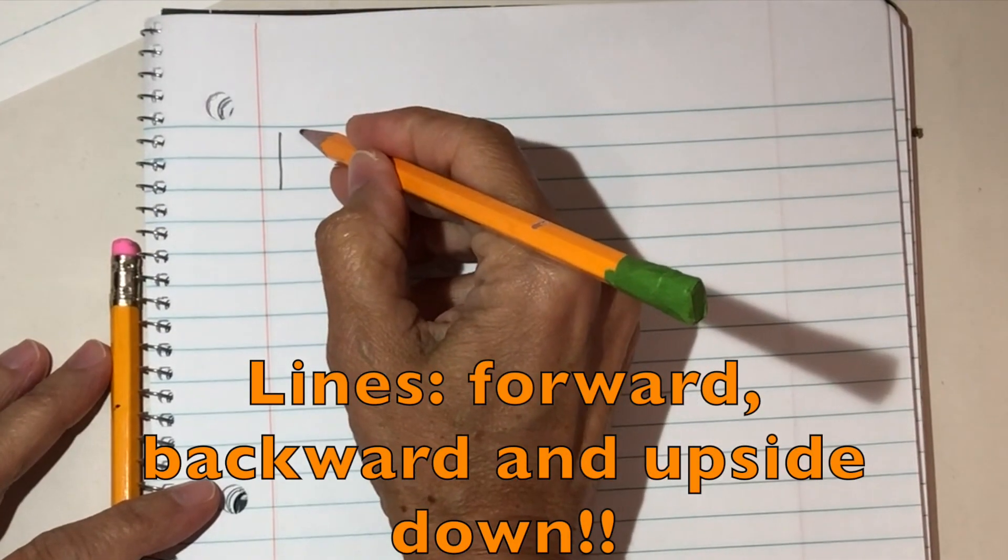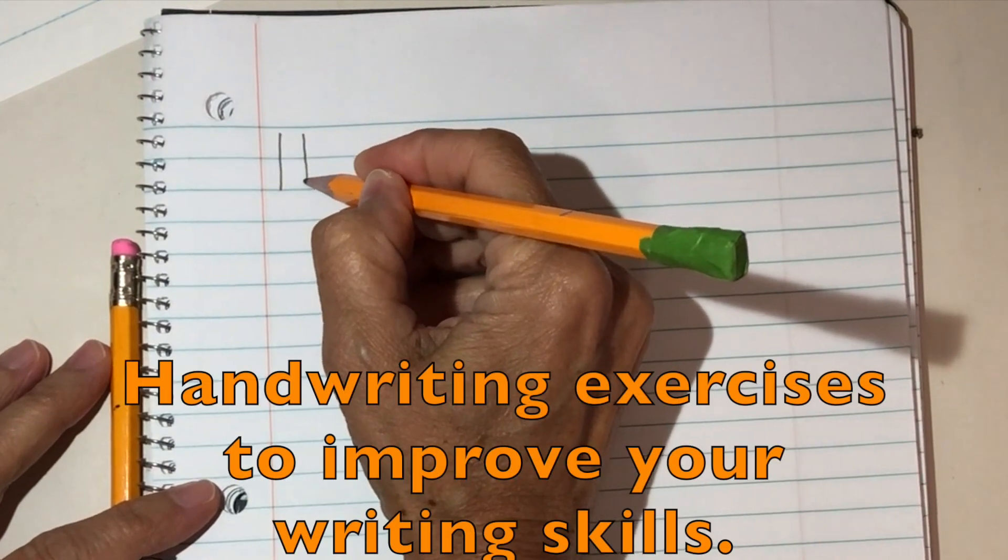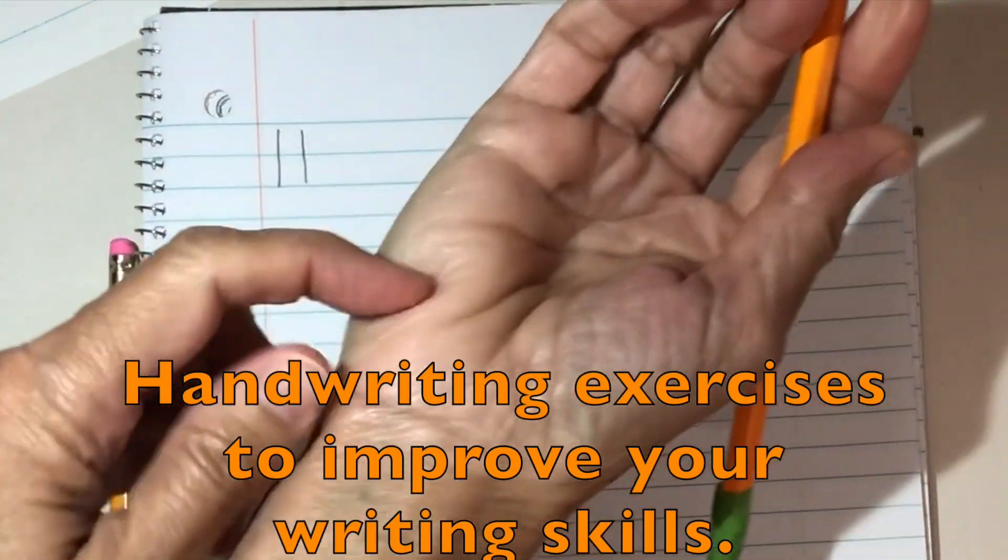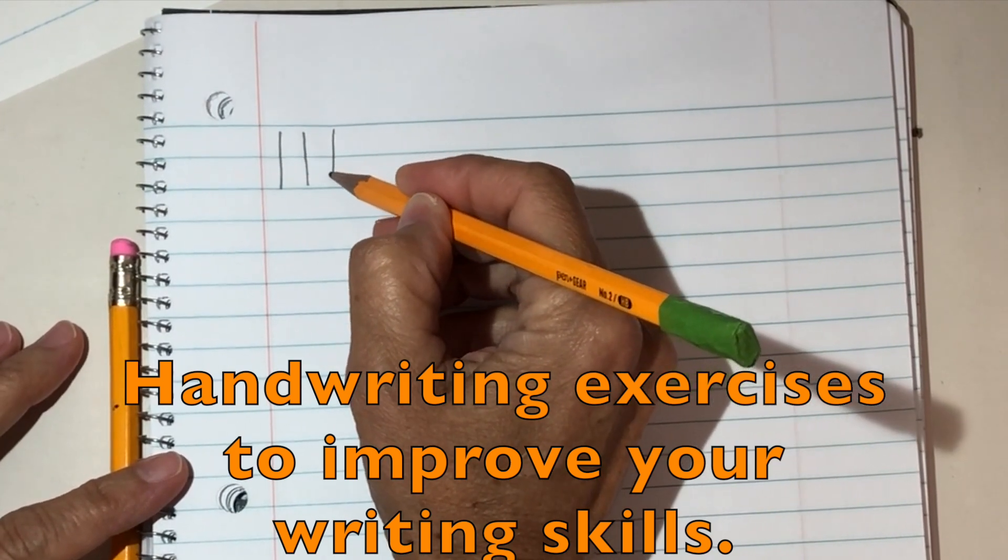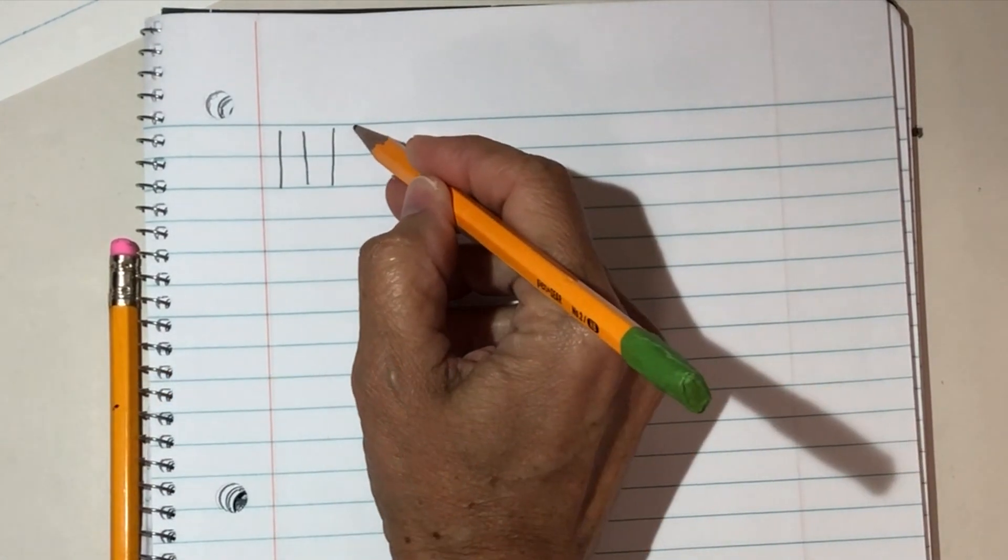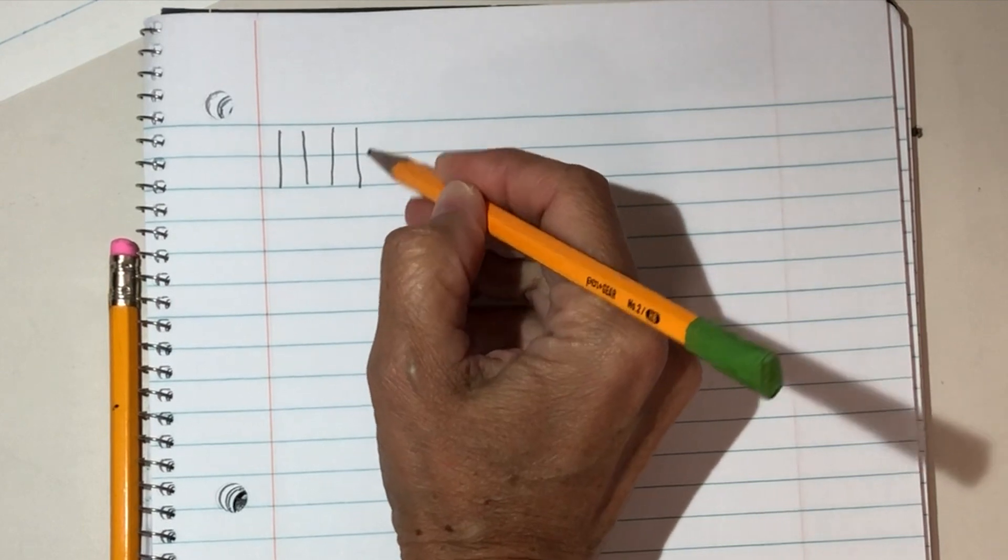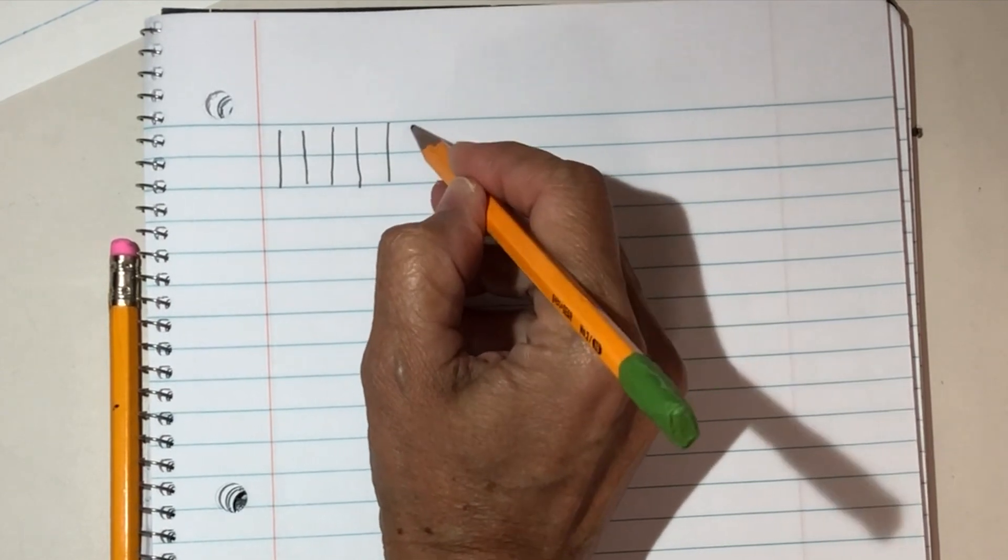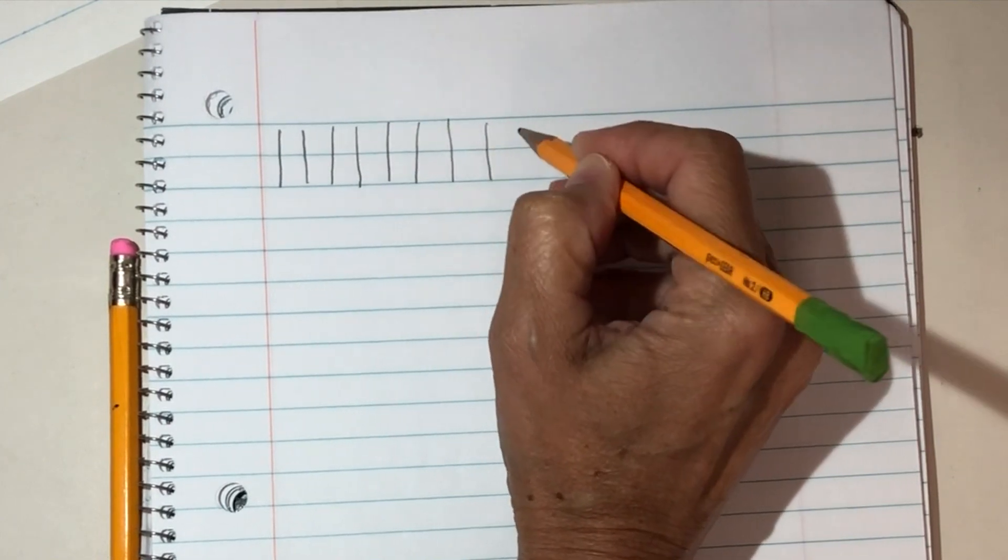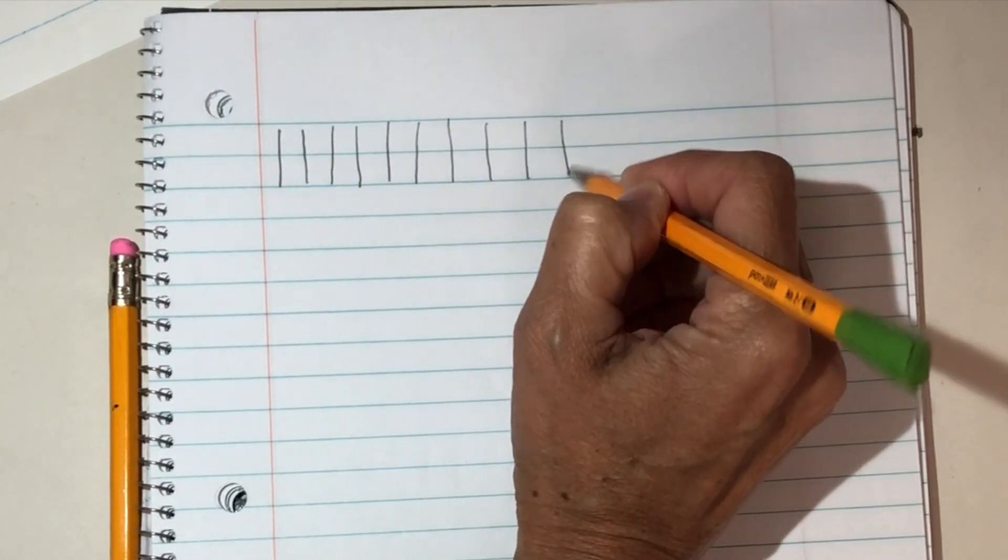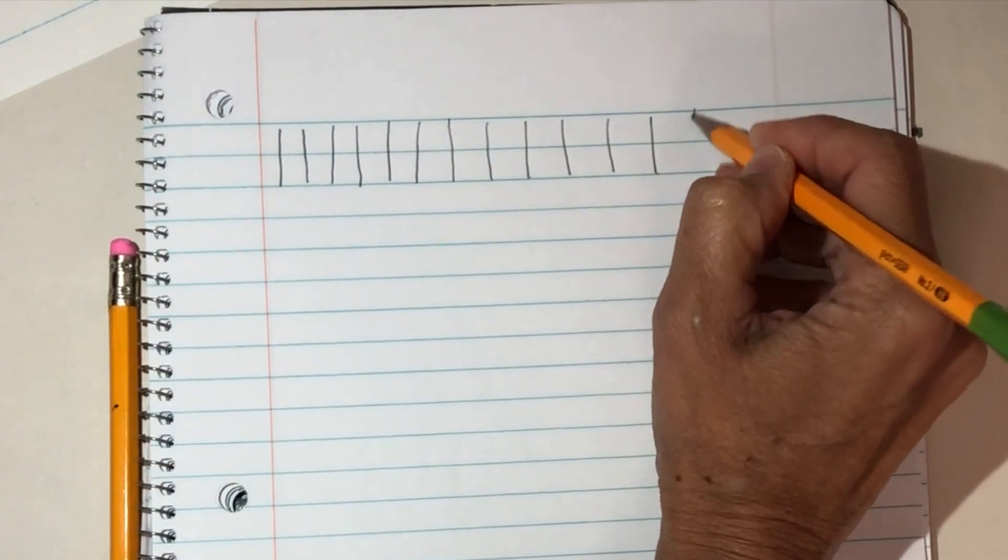Okay, we're gonna practice drawing lines like this. Put your hand on the desk and pull the pencil down like this. Can you draw lines going down? Okay, draw the lines going down all the way across the page.